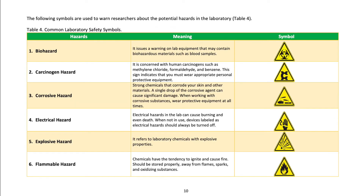Laboratory hazard symbols — the following symbols are used to warn researchers about potential hazards in the laboratory. Biohazard: issues a warning on lab equipment that may contain biohazardous materials such as blood samples. Carcinogen hazard: concerned with human carcinogens such as methylene chloride, formaldehyde, and benzene; this sign indicates that you must wear appropriate personal protective equipment.